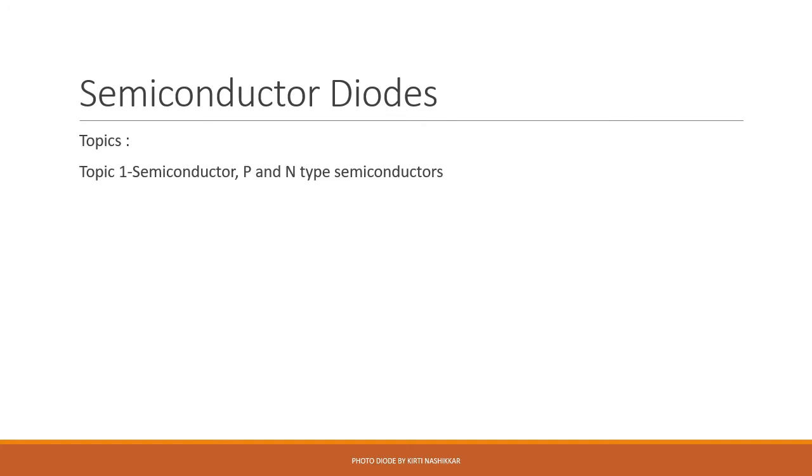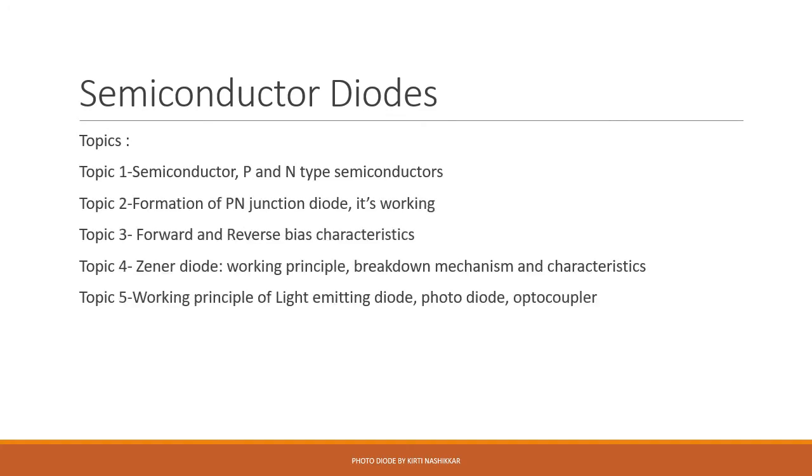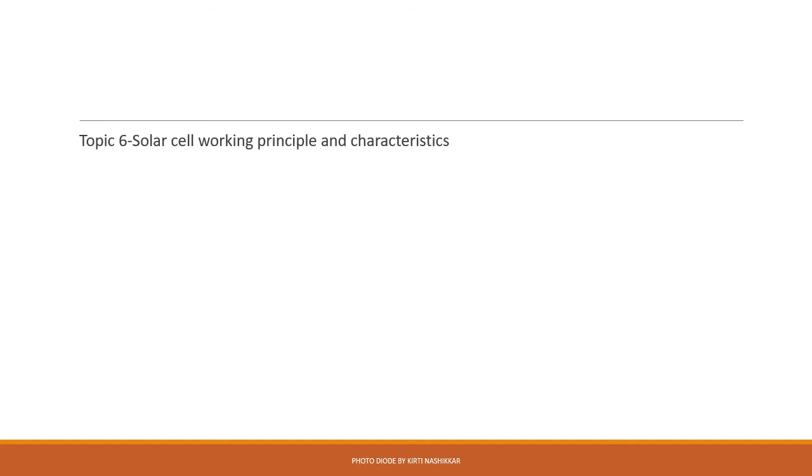Semiconductor diodes we are discussing and we have seen all these topics related with the PN junction diode, its forward-reverse characteristics, VI characteristics, Zener diode, LED photodiode and in the last lecture we have seen about the optocoupler. Today, we will discuss solar cell working principle and characteristics. This is the last topic of semiconductor diodes.